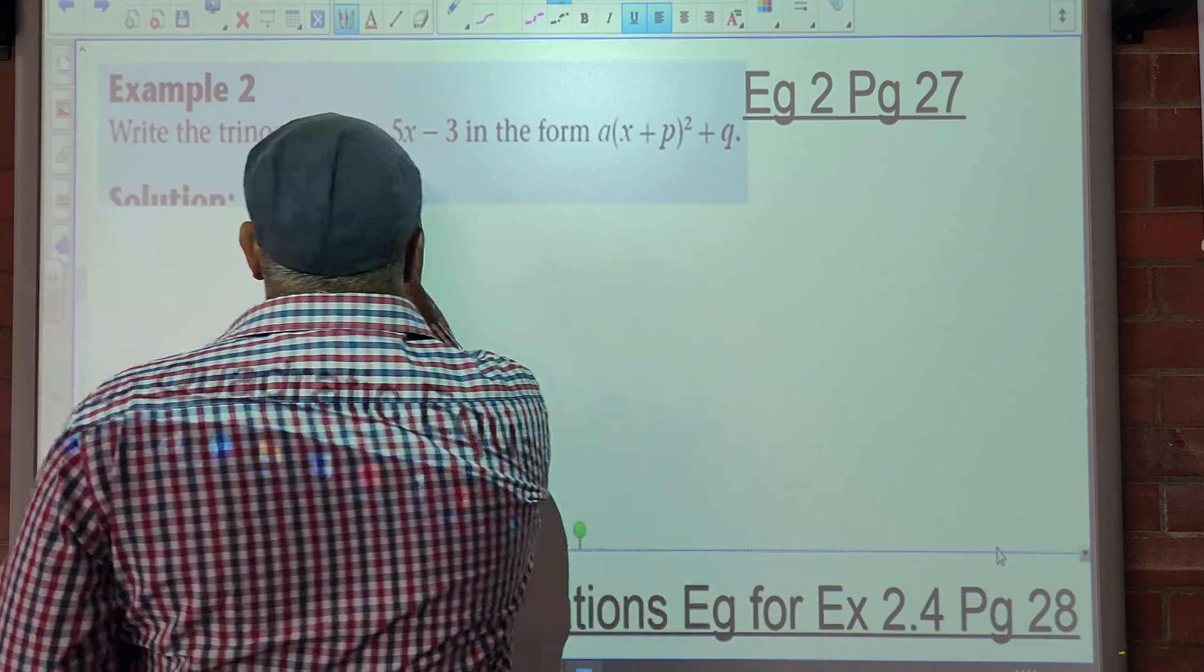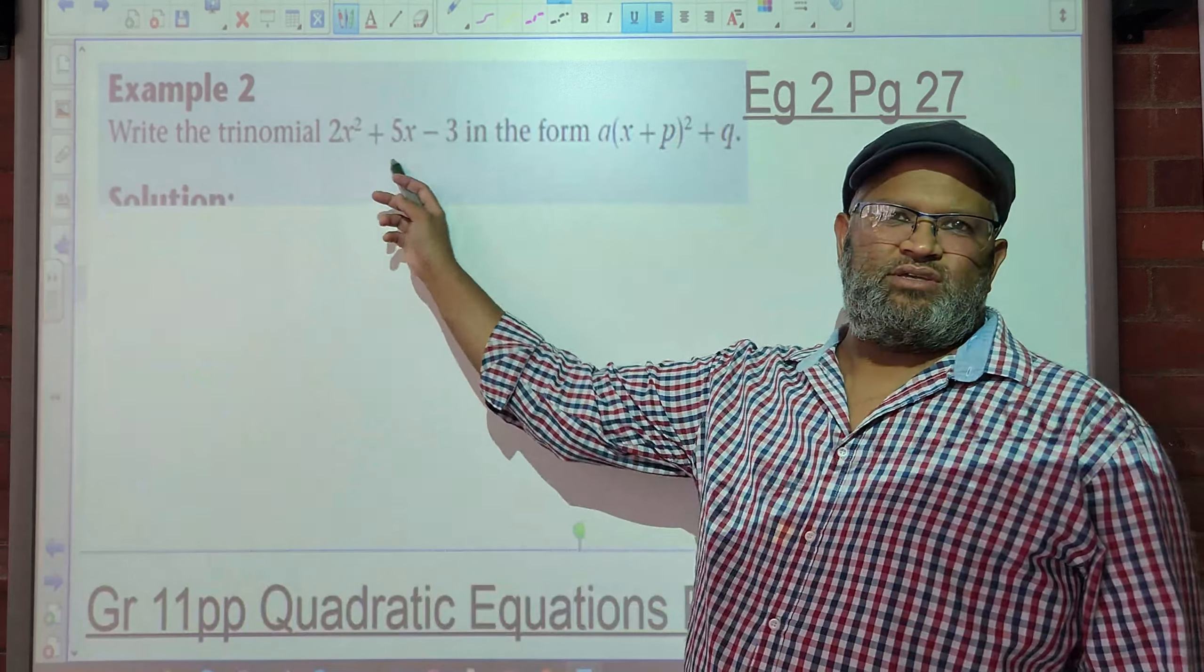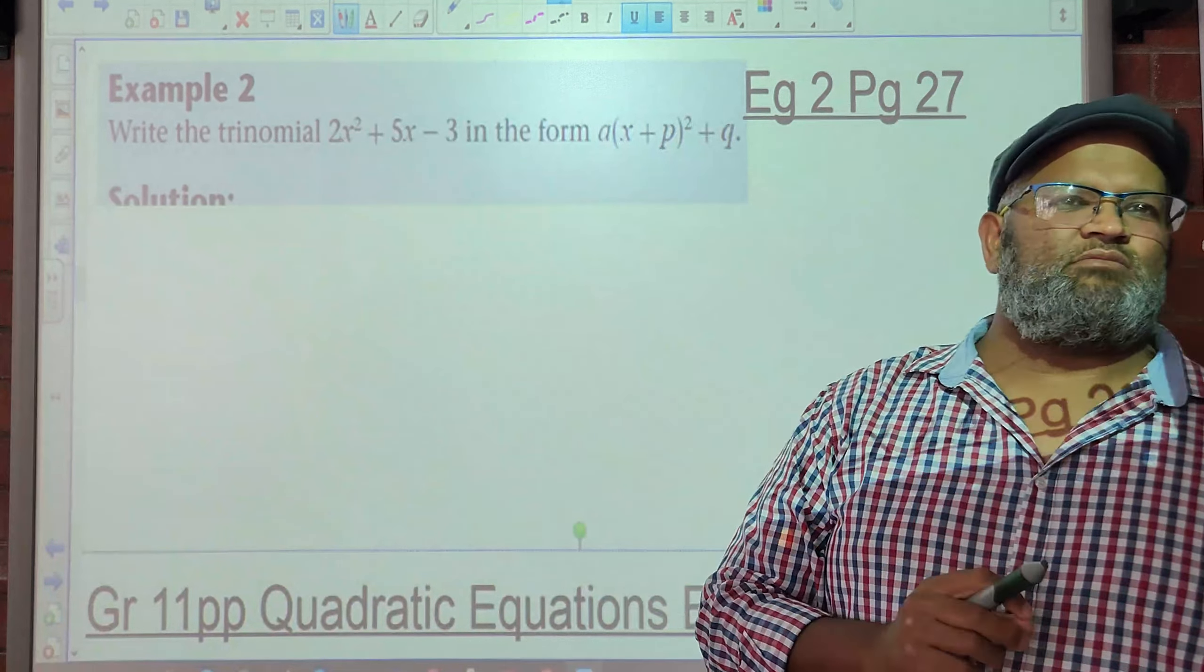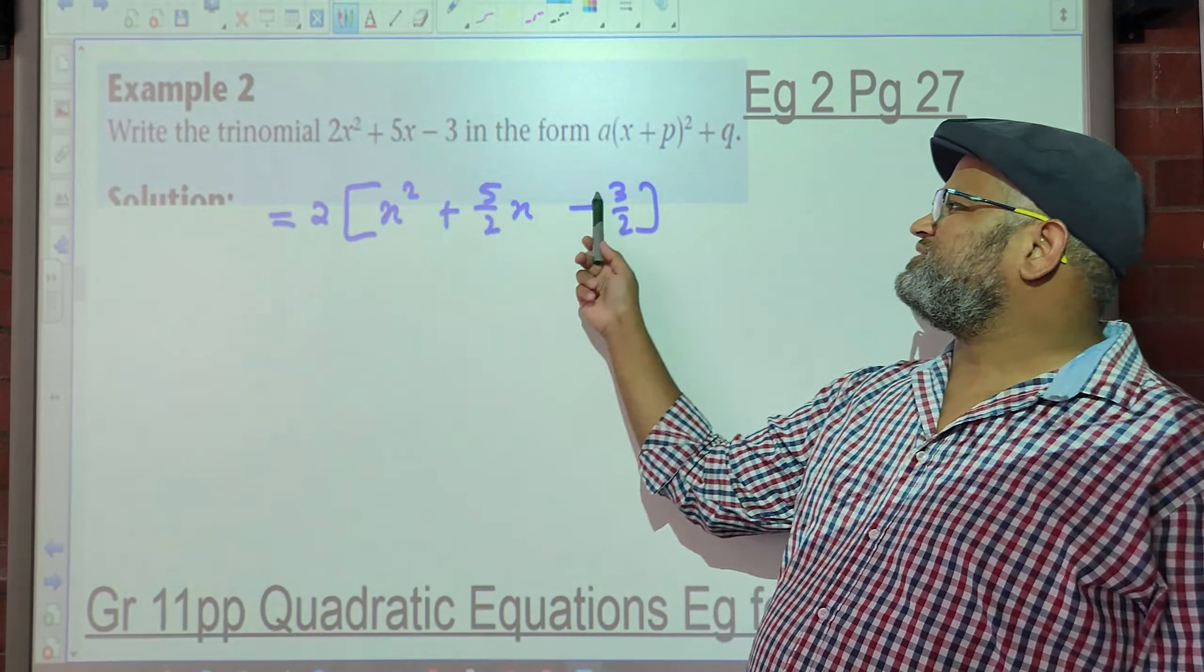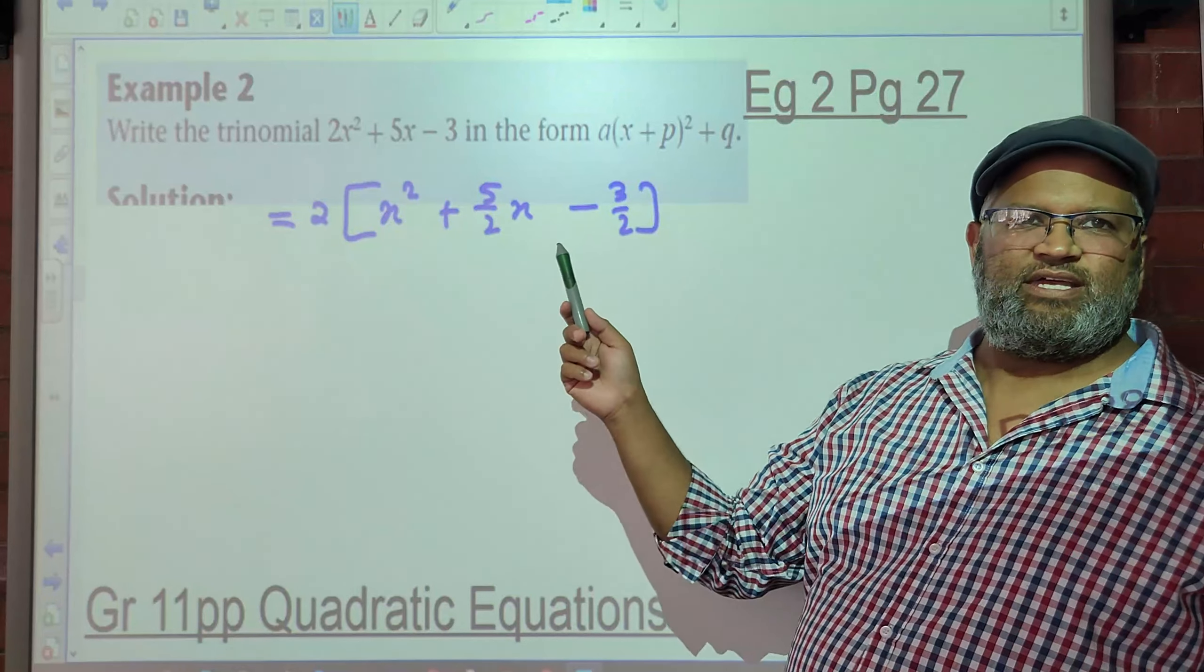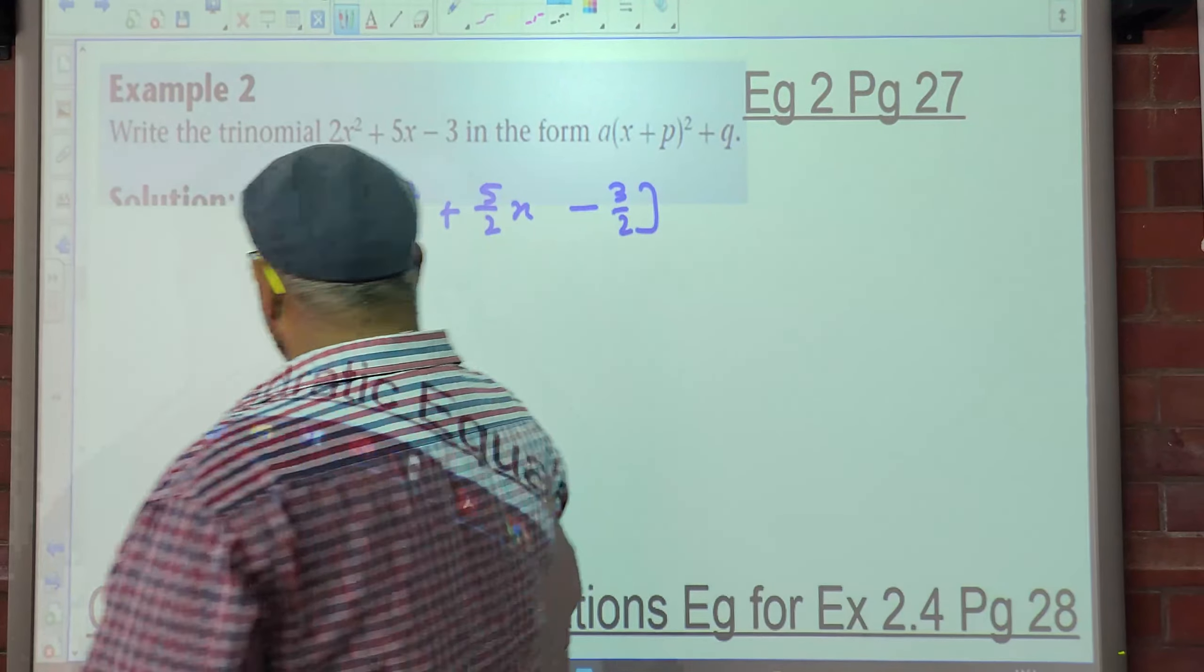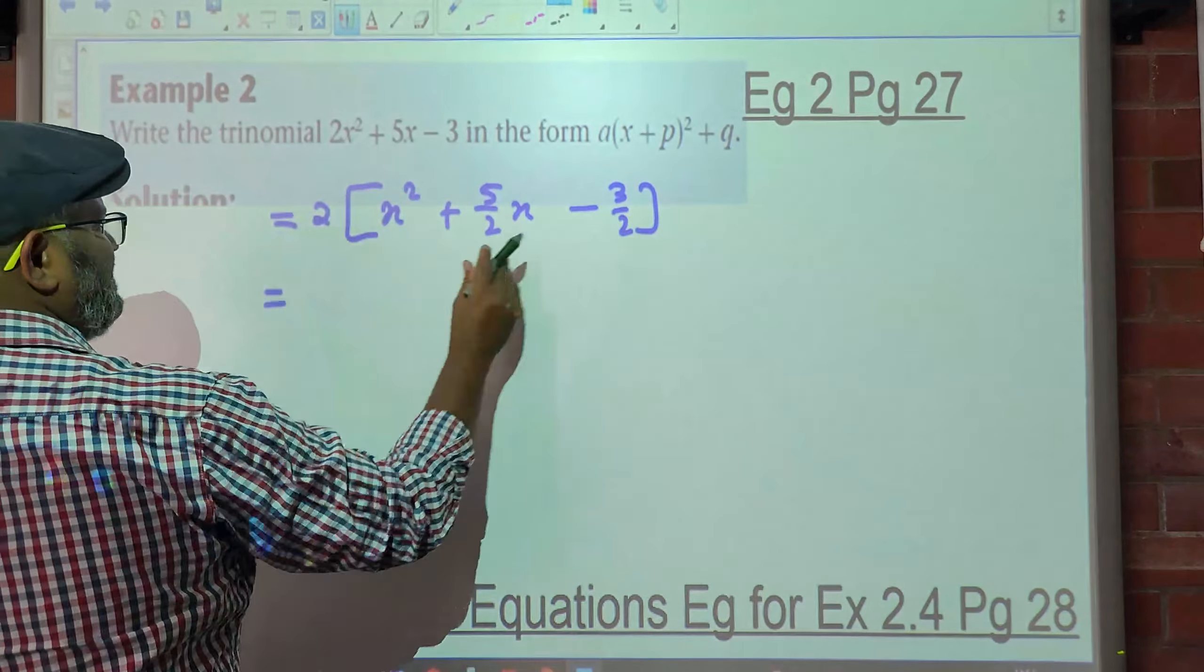So what am I taking out as a common factor? 2. Although 2 is not common throughout, I'm going to take 2 out as a common factor. Why? Because I want the 1 in front of x squared. So if I take 2 out, what will I be left with? x² + 5/2x - 3/2. Remember when I multiply this out: 2 times x² is 2x². 2 times 5/2x is 5x. 2 times -3/2 is -3. You see that? That is now what we're used to working with.